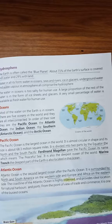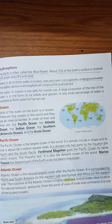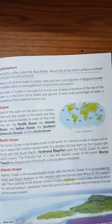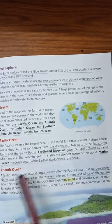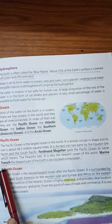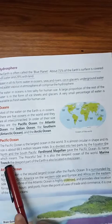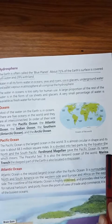Pacific Ocean is the largest ocean in the world. It is divided into two parts by the equator: North and South Pacific. Ferdinand Magellan gave the Pacific Ocean its name, and its meaning is 'the peaceful sea.' The deepest part of the Earth is the Mariana Trench, which is located in this ocean.